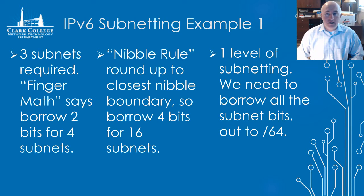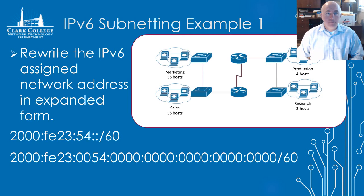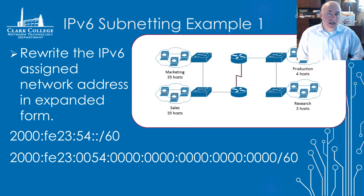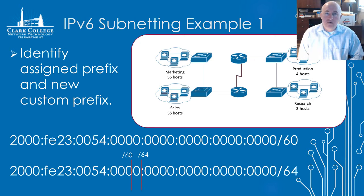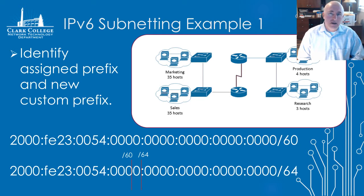We're doing only one level of subnetting, so all subnets need to end up with slash 64 prefix lengths. Step one is to rewrite the IPv6 assigned network address in its expanded form. IPv6 addresses are normally written in compressed form with leading zeros removed and all-zero hex tets replaced with a double colon, so we'll reinflate this number to its expanded form as shown. Step two, we identify the assigned prefix — slash 60 — and the new custom prefix, and draw these in as lines directly on the IPv6 address. With IPv6 we don't need to take this to binary because we're working in nibbles, which is much simpler.